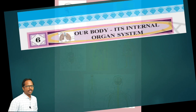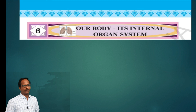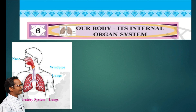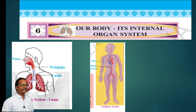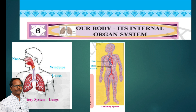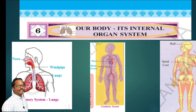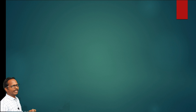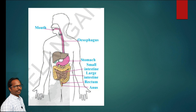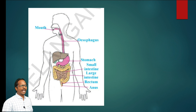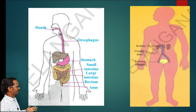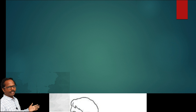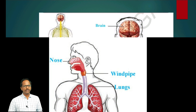First one — look at this picture, children. The first one is the respiratory system. Second one, the circulatory system. The third one is the skeletal system. And the fourth one, the digestive system. And the fifth one is the excretory system. And the last, sixth one, the nervous system.